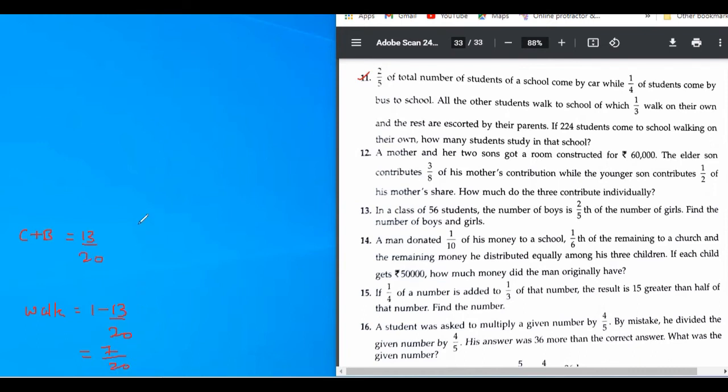Out of that, the question says one third walk on their own. One third of the walking students walk on their own. So in the own category, we can say one third of seven upon twenty. That is one third, that means seven upon sixty. That value.